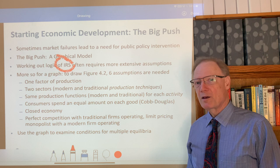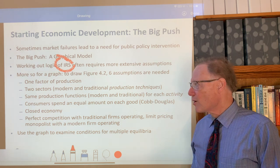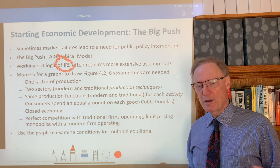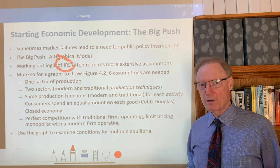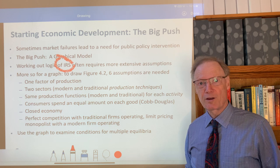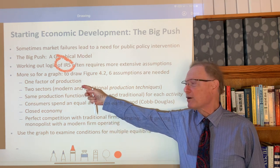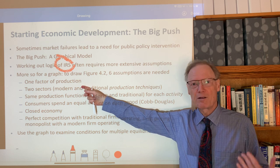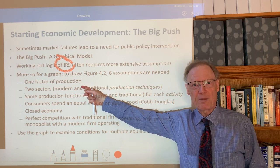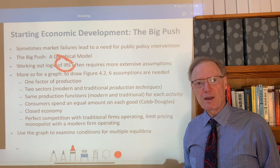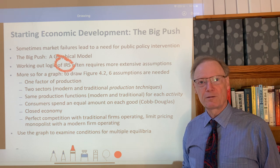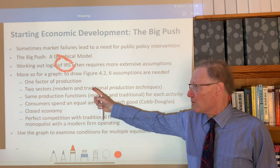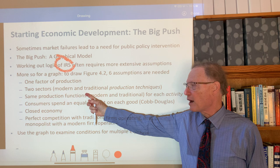The first assumption is that there's one factor of production. When we looked at the AK or Harrod-Domar growth model, the one factor was capital — fairly elastic, including human capital as well as physical capital. Here our one factor of production is going to be only labor. The elasticity interpretation here is that it takes workers to produce capital, so we can think of existing capital as the result of prior work — sometimes called 'frozen labor.'